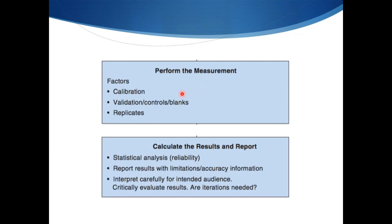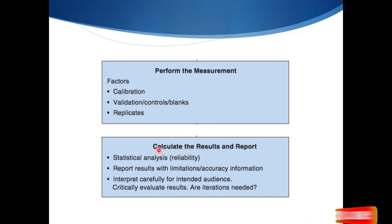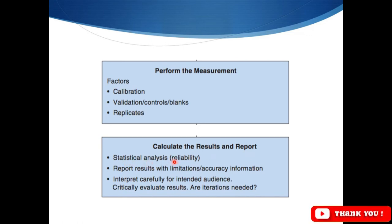Other factors required for performing measurements include calibration and validation of the method being used. We also have to perform experiments in replicates. These are the requirements necessary for performing the measurement. Then we calculate the results, make a report, and perform the appropriate statistical analysis — we must be sure which kind of statistical analysis is required by the method. We then report results with their limitations.